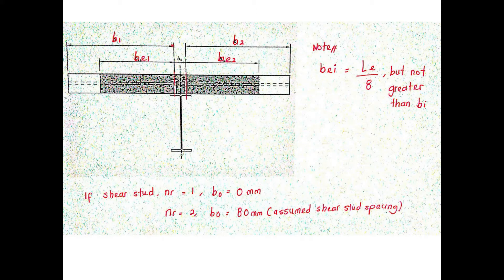If only one shear stud is provided throughout the top flange of the beam, the distance of b_note must be taken as 0 mm. Meanwhile, if two shear connectors are provided throughout the top flange of the beam, the length of b_note can be taken as 80 mm. On the other hand, b_i can be calculated by dividing the effective length by 8, but this value must not be lesser than b_i.